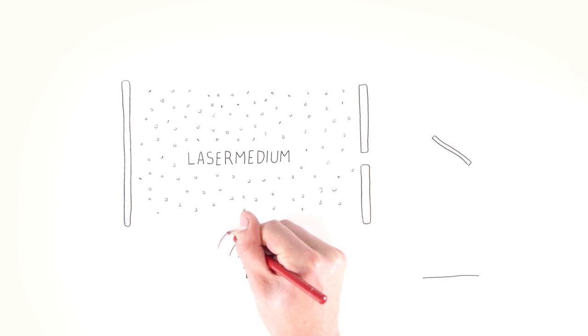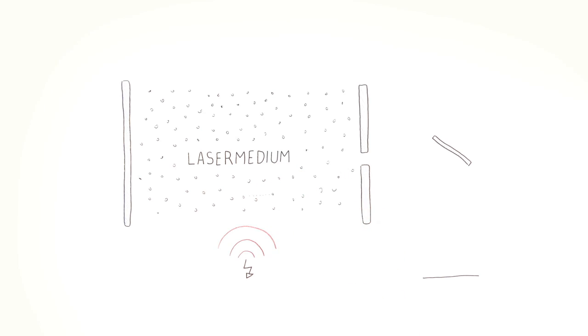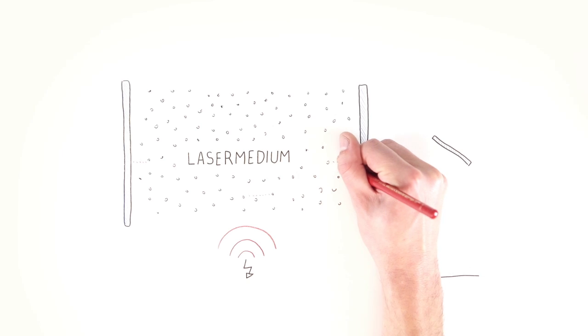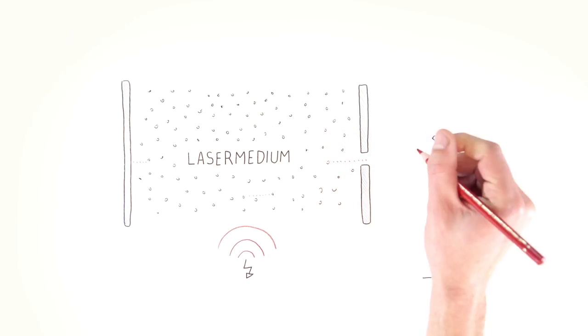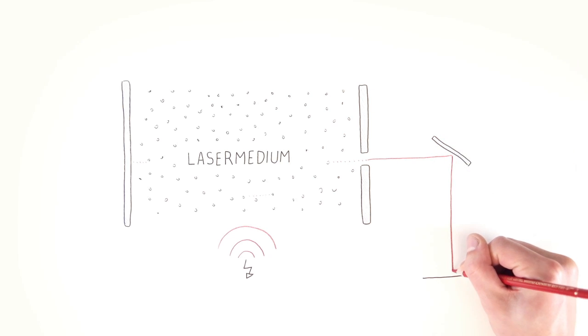Energy is repeatedly pumped into the laser medium, stimulating the particles, so that they can release more photons. The mirrors reflect the photons, thereby increasing the number of photons further and further. A directional beam is formed.